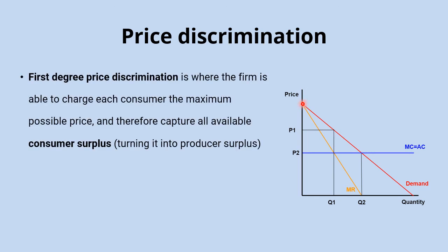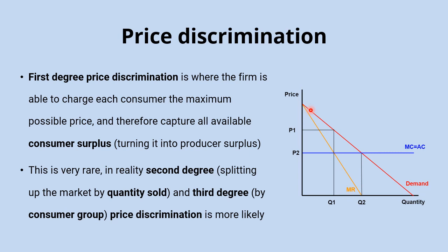First degree price discrimination — sometimes called perfect price discrimination — is where the firm charges each consumer the maximum price they are willing to pay for each item sold. On the diagram, the firm picks off each individual consumer along the demand curve at the maximum they'll pay, thereby transferring all available consumer surplus and turning it into producer surplus. This is very unlikely in real life — possibly an expert haggler on a market might come close — but second and third degree price discrimination are much more common in reality.